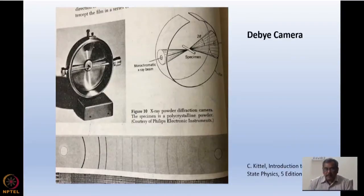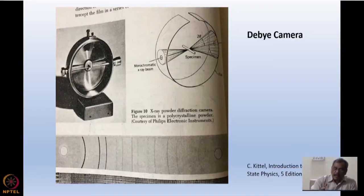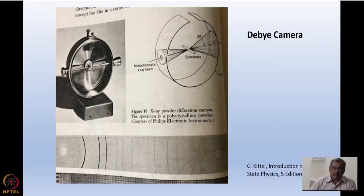Going back to Kittel — I hope some of you have done this experiment, we did it during master's days. This shows how a powder crystal looks. This is called the Debye camera, where a photographic plate was wrapped inside a circle. This is the incoming beam and this is the outgoing beam, and a powder crystal is kept at the center.